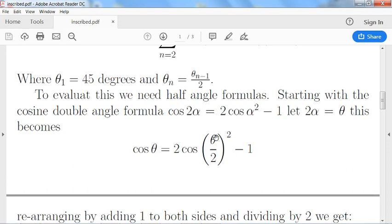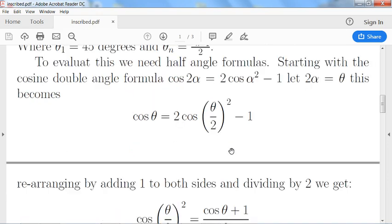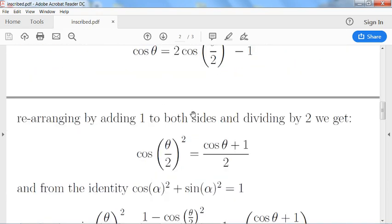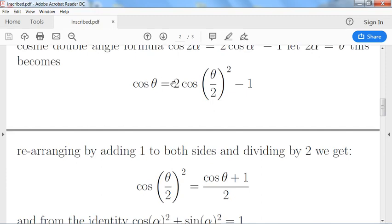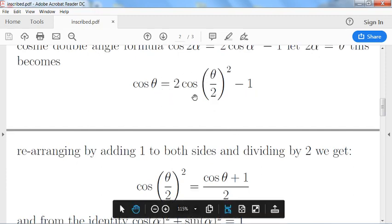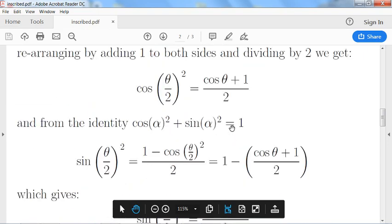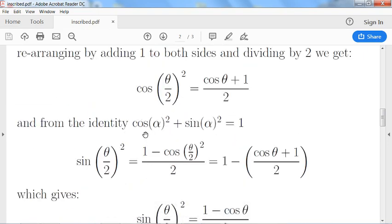And rearranging by adding one to both sides of this and dividing by 2 to get cos θ squared on its own, we get this formula. And then from basically from Pythagoras's theorem...